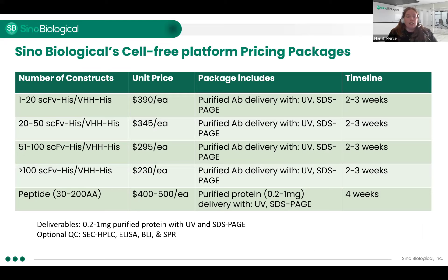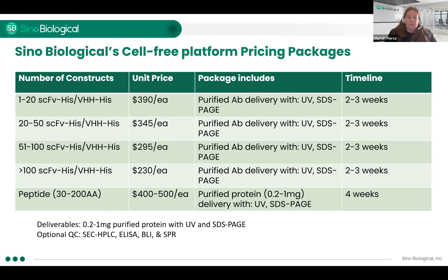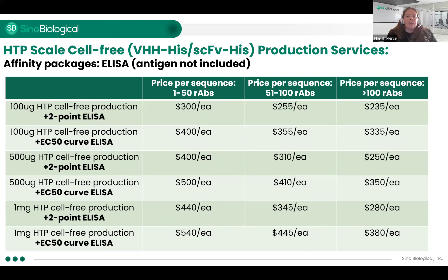A little bit about our service packaging and prices. It is a high-throughput system — we can do up to 100 plus constructs at a time, and we do have the throughput for that. Our pricing varies based on the number of constructs, with bulk pricing available. We can also couple these with affinity analysis, which is very important for doing that small-scale screening and getting that affinity ranking so you know which molecules to move on with.